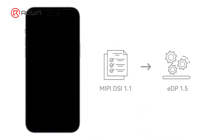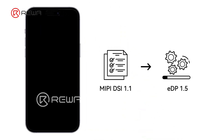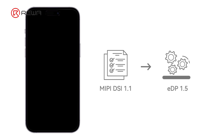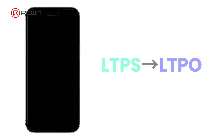A protocol upgrade enables better synchronization. The protocol has been upgraded from MIPI DSI 1.1 to eDP 1.5, allowing for better synchronization. The second big upgrade is the DisplayPanel — a switch from LTPS to LTPO.